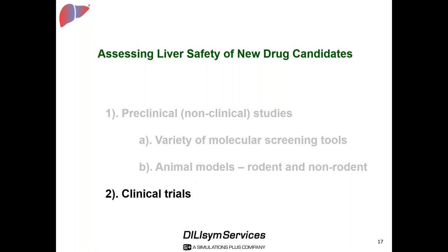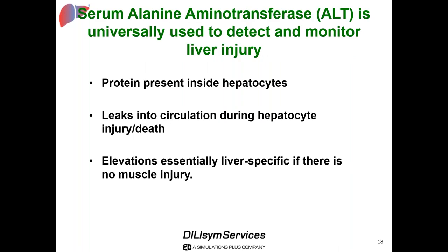In clinical trials, the rubber meets the road—you see whether preclinical screening was effective and what liver liabilities exist. The blood biomarker universally used as most sensitive and specific in clinical trials is serum alanine aminotransferase, or ALT. This protein is present inside liver cells and naturally enters blood as cells turn over. Elevations are essentially liver-specific when there's no muscle injury. Over three times the upper limit of normal is a liver-specific event, unless AST and CPK are elevated together.